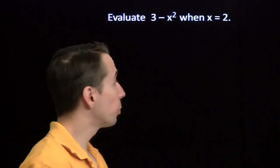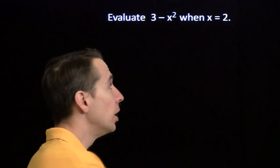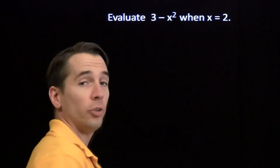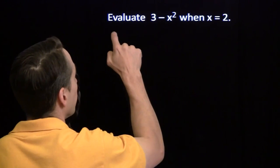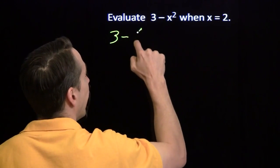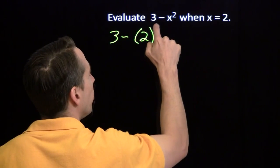We know how to evaluate one variable expressions for certain values of the variable. Just take that value, substitute it in for the variable. So we've got 3 minus x squared. We're going to take x equals 2. We just put in the 2 where the x is.